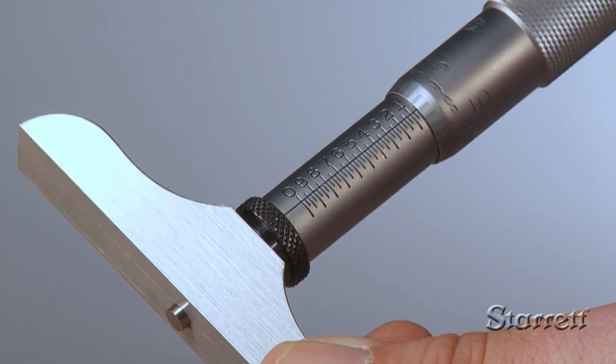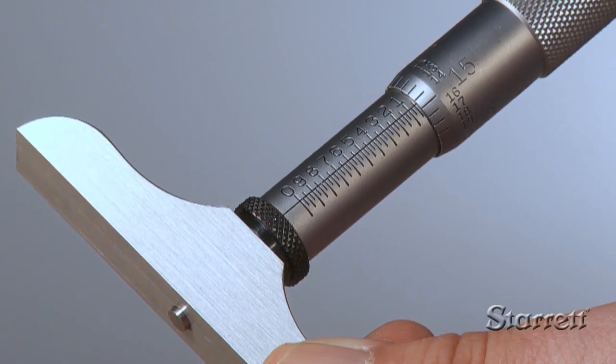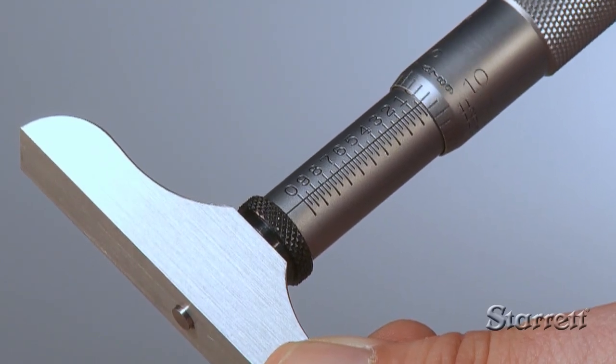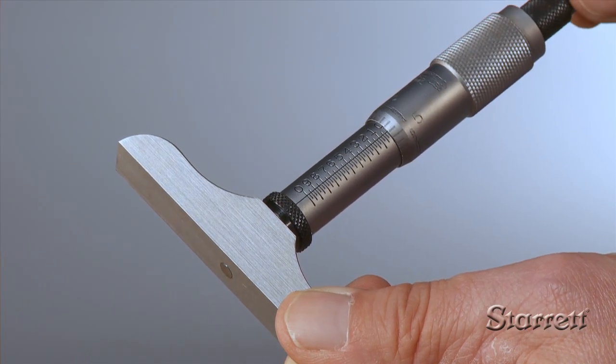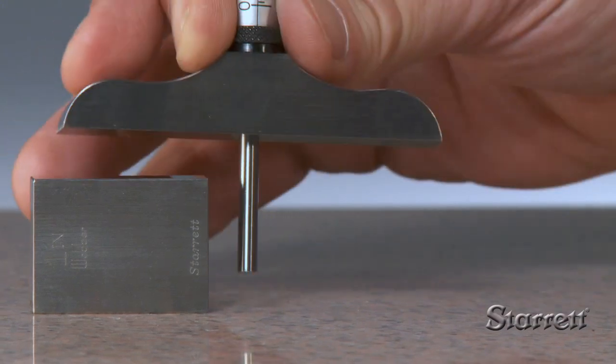The sleeve graduations run in the opposite direction. If the zero to one inch rod is in the tool, zero depth would be when the tip of the rod is flush with the base and the spindle turned out one full inch.